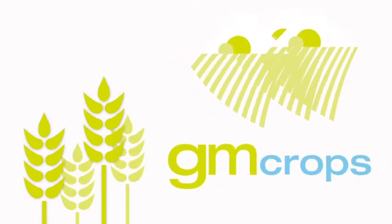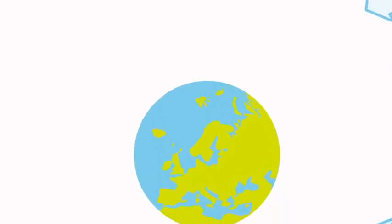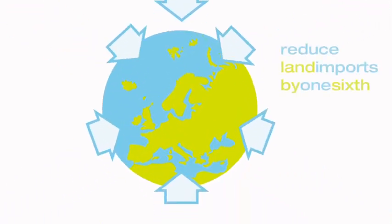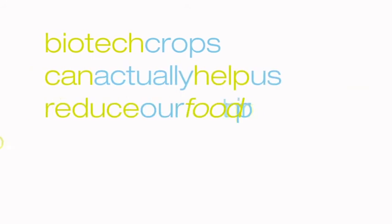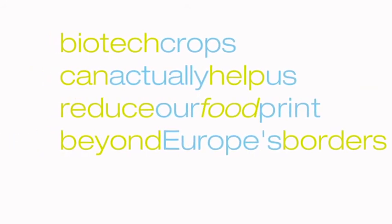Look at it this way. By planting GM crops, harvest can be bigger. This means we could reduce our net land imports by one-sixth. So biotech crops can actually help us reduce our food print beyond Europe's borders.